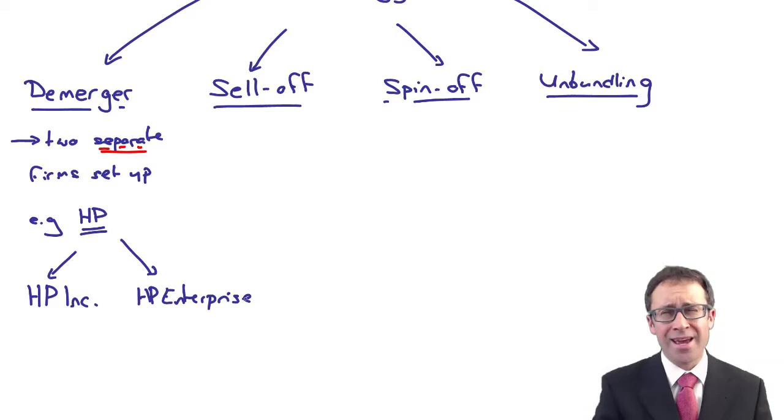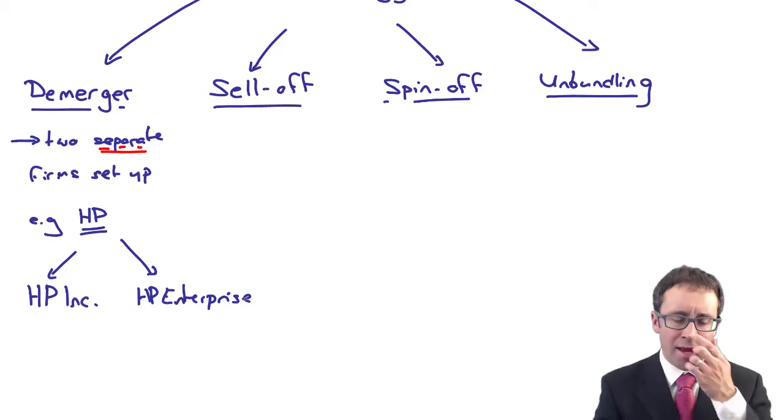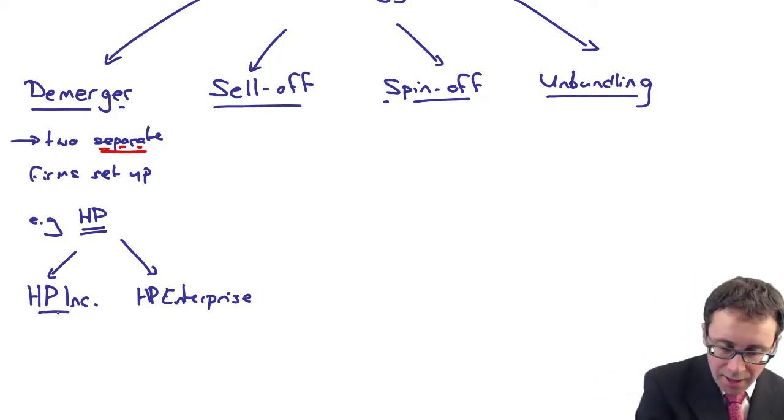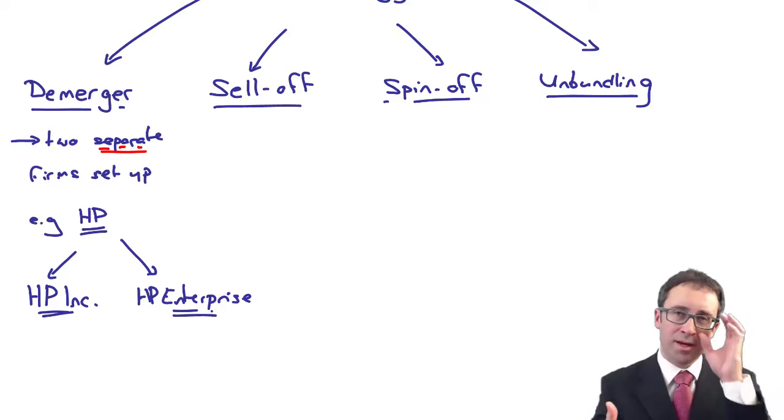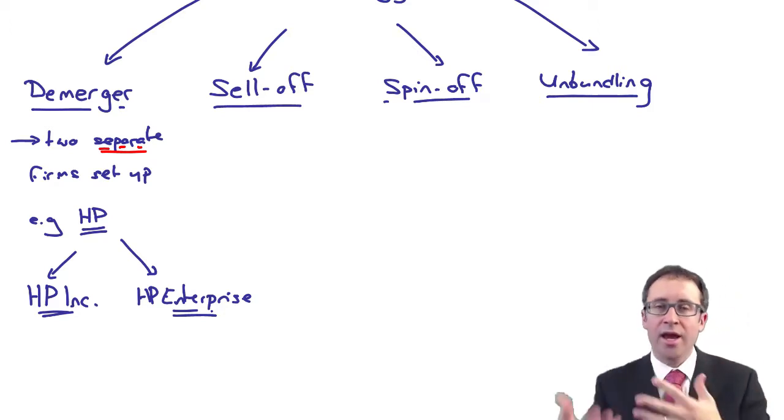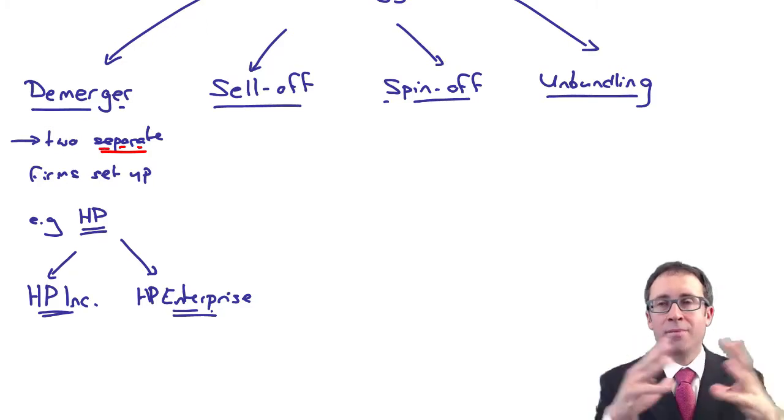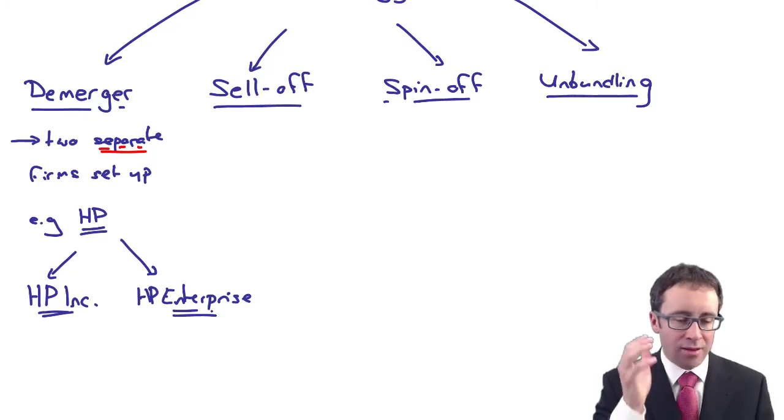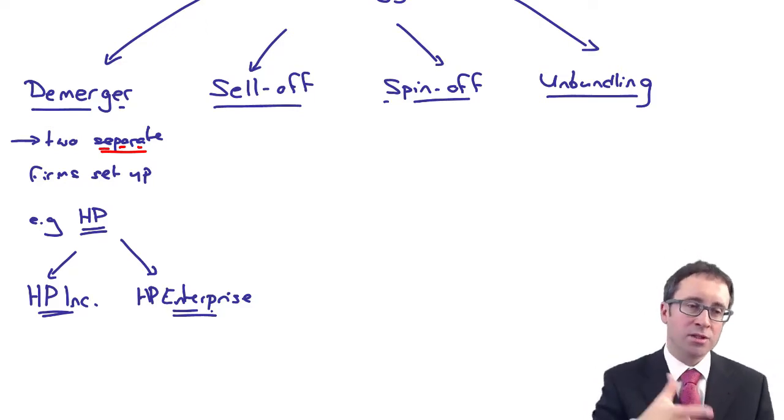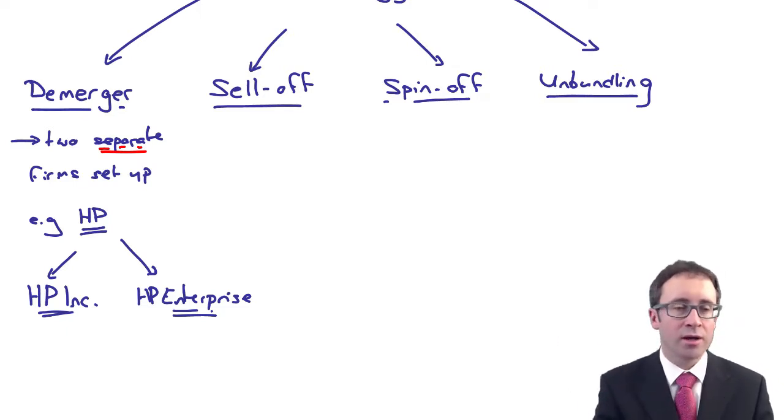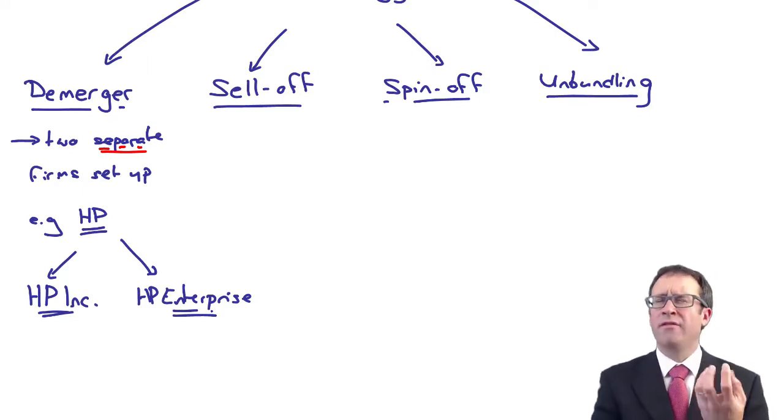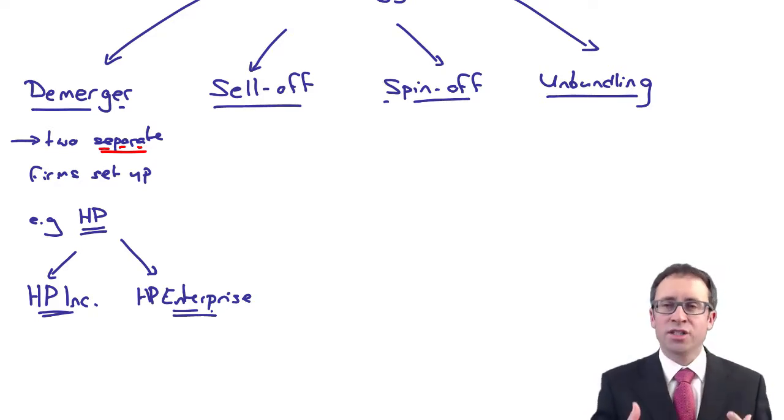HP Inc. focuses on computers and printers and HP Enterprise focuses on other hardware and services. They are now two separate businesses. But if you previously owned shares in HP, you would then have a share in HP Inc. and a share in HP Enterprise. The HP business itself was separated out. That means HP Inc. can focus on what was HP's core business, which was possibly doing better in terms of computers and printers, and attention can be dealt with elsewhere on the hardware and services for HP Enterprise.